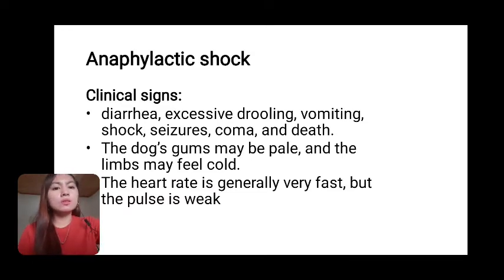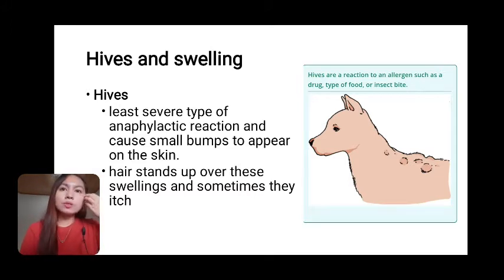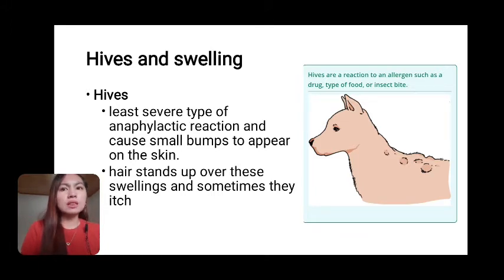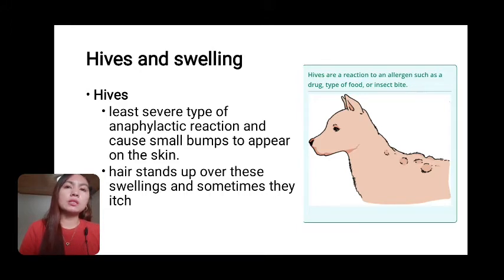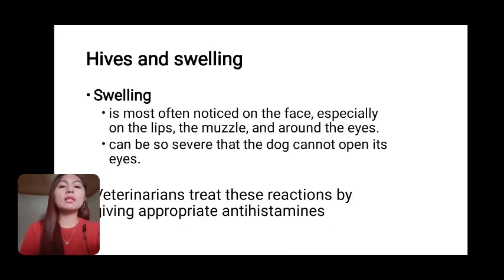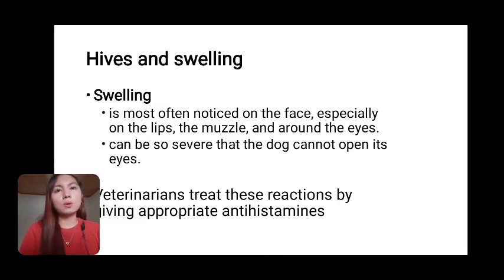Next, hives and swelling. Hives or urticaria and areas of swelling are caused by allergic reactions to drugs, chemicals, something eaten, insect bites, or even sunlight. This will develop within 20 minutes of exposure to the allergen. Hives are the least severe type of anaphylactic reaction and cause small bumps to appear on the skin. Hair stands up over these swellings and sometimes they itch. Swelling is most often noticed on the face, especially on the lips, the muzzle, and the area around the eyes. It can be so severe that the dog cannot open its eyes. Veterinarians treat these reactions by giving appropriate antihistamines.